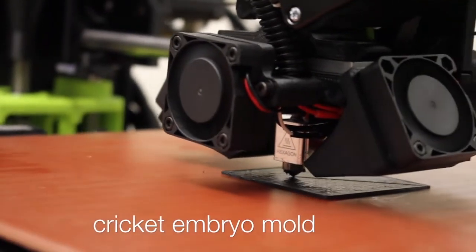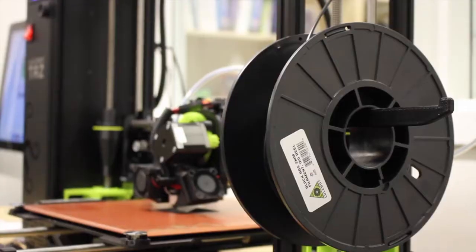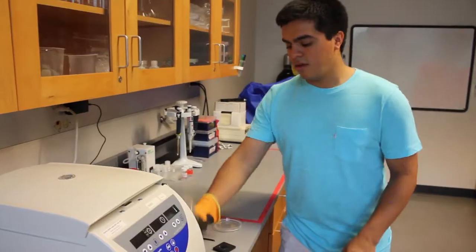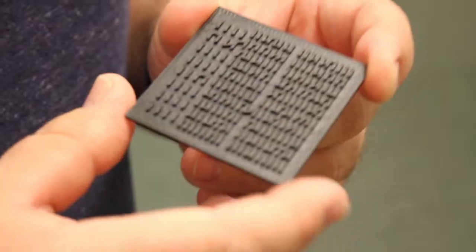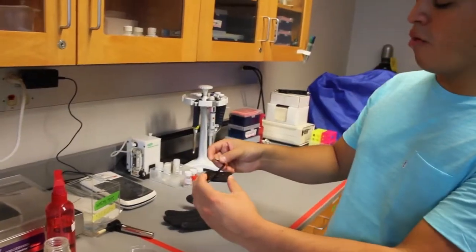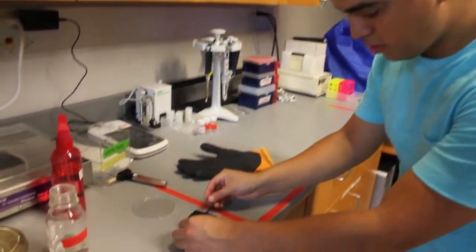My project this summer was to inject double-stranded RNA into cricket embryos, and to do this we had to find a way to keep those embryos from moving. This is why we're using some of these molds, these molds that we use as wells in an agarose gel in order to put the egg in there and then we can inject it.